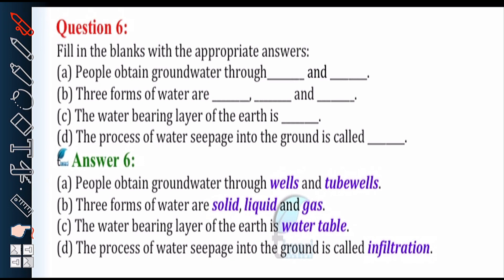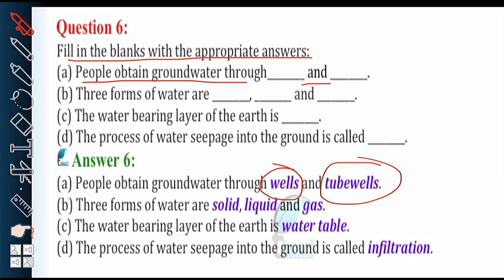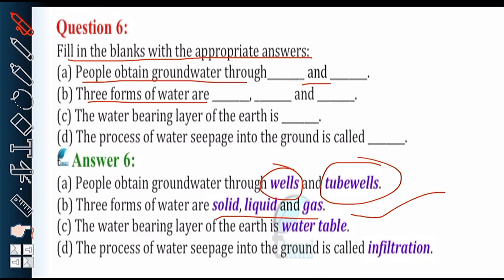Next is question number 6, fill in the blanks with the appropriate answer. First: people obtain ground water through wells and tube wells. Second: the three forms of water are solid, liquid, and gas. You will study these three states of matter in more detail in Class 9.